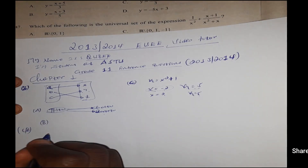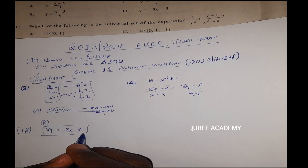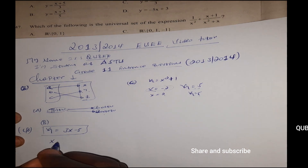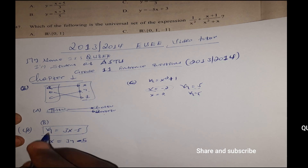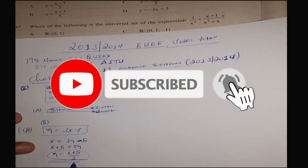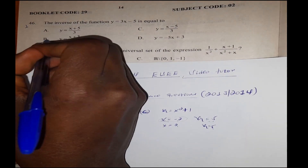The function given by y is equal to 3x minus 5. The inverse is found by solving: y is equal to x plus 5 over 3.